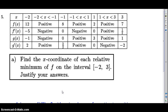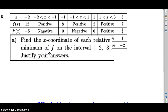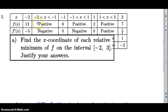Part A: Find the x-coordinate of each relative minimum of f on the interval negative two to three, and justify your answer. So I'm going to slide this up to cover g and g prime, which we don't need right now. For the relative minimum of f, let's take a quick sketch of the graph. f is positive everywhere, going from 12 to 8 to 2 and then back up to 7.